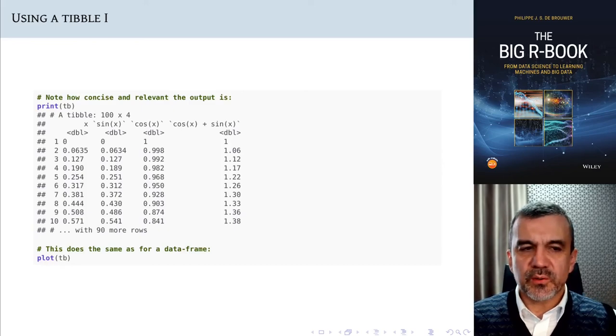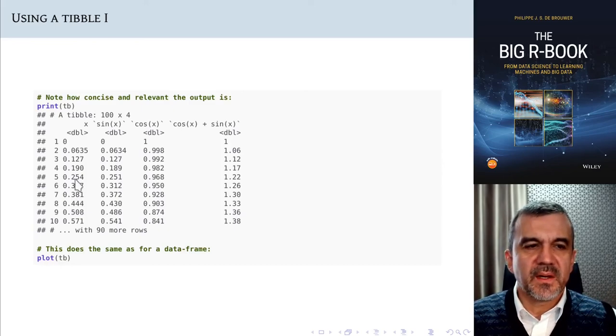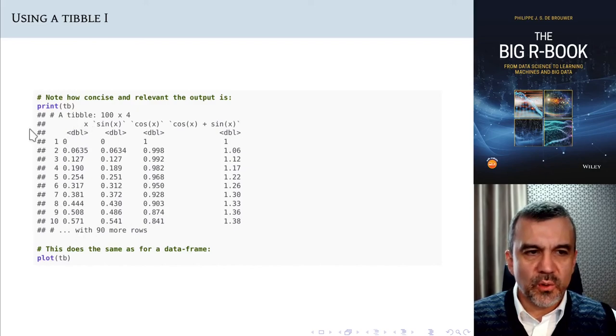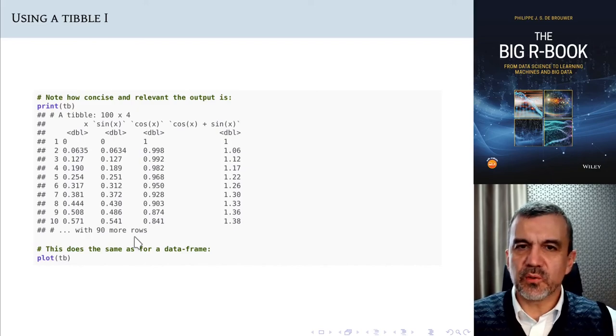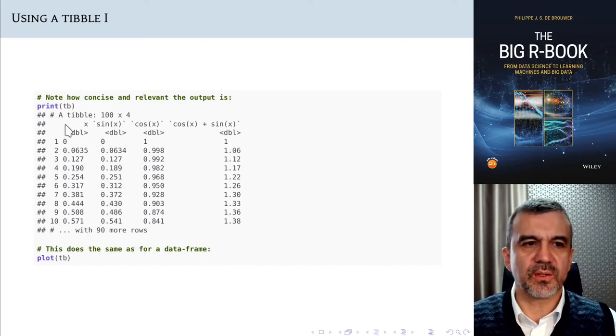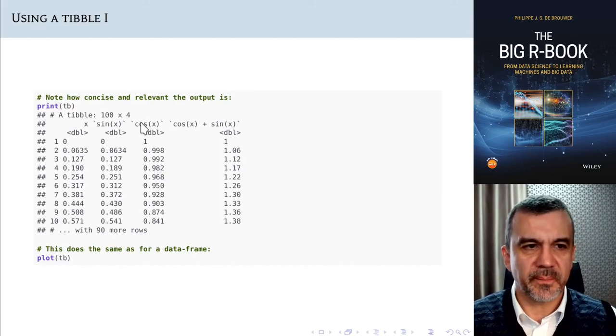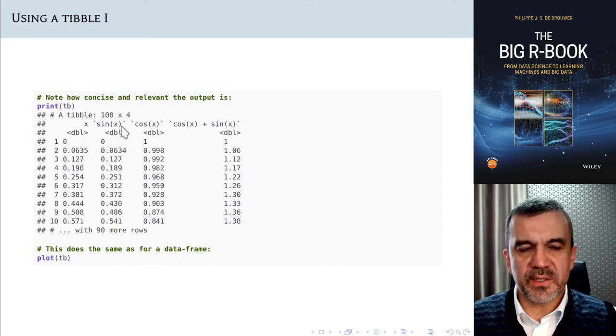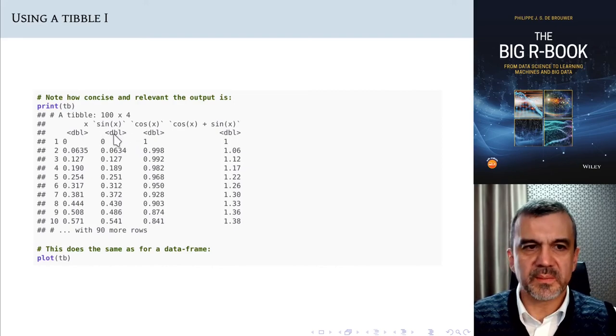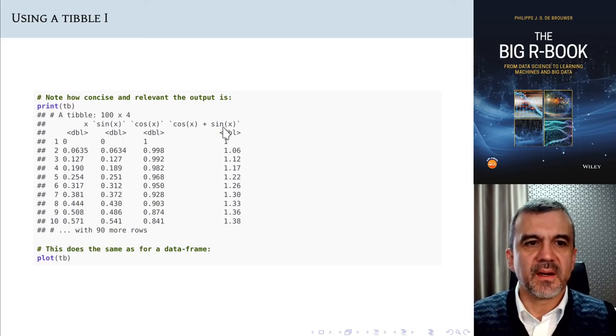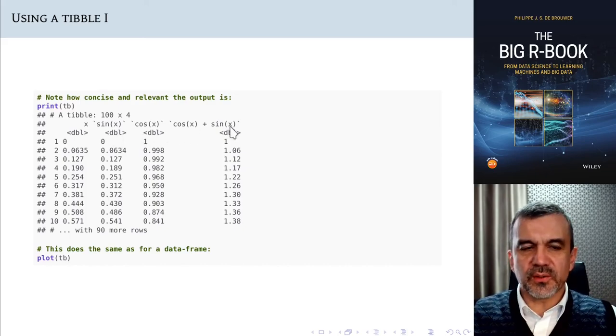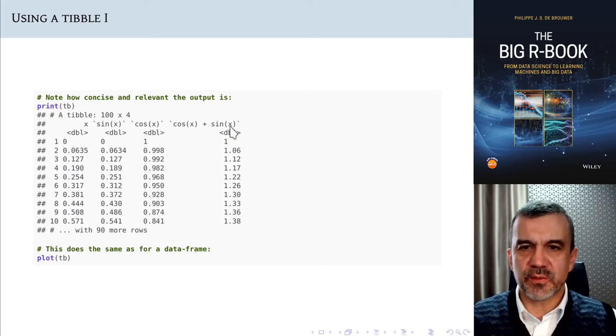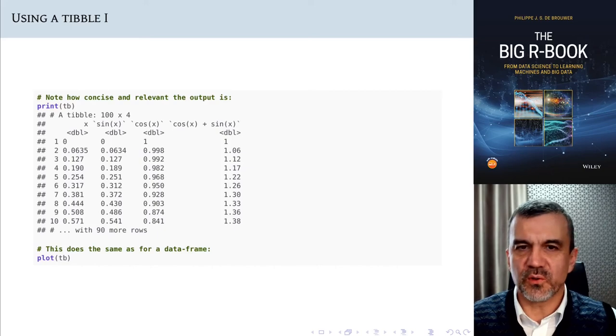When you ask a tibble to report on itself, it will first of all never show more than something like 10 lines, and summarize for you how many lines there are. So it will not overrun the screen. That's quite handy, so you can always see the headings of what it is printing. It will also tell you what type of information is in your column. Also that is quite handy. And also on the horizontal dimension, it will not overrun the screen. It will just show what will fit on the screen and then summarize for you what is still left out.